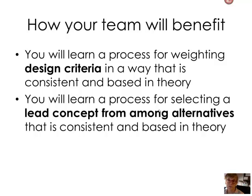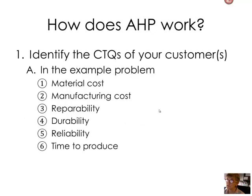Once we've determined the importance of those criteria, we can move forward by choosing the best design among possible multiple designs. We'll use AHP in an example problem so you can see how this works to get our best criteria and then use that information to select a good design. We're going to use a sample problem that consists of six criteria that customers for a particular product have said are important to them: material cost, manufacturing cost, repairability, durability, reliability, and time to produce. Right now we're going to try to determine which of those is the most important criteria to our design.